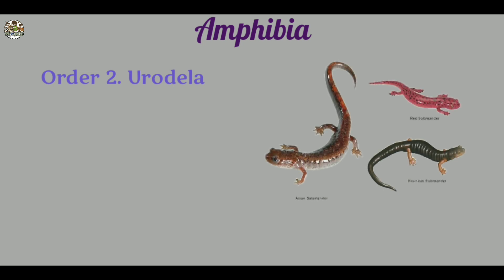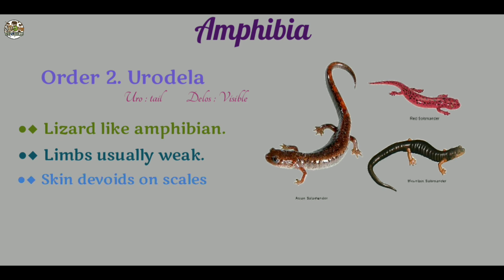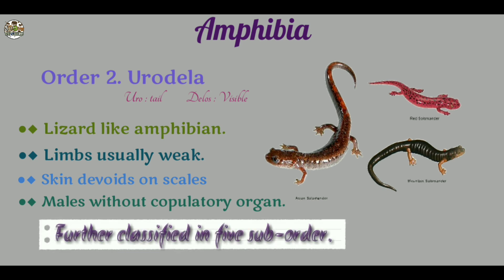Order two: Urodela. 'Euro' means tail and 'delos' means visible. Here are some characters of order Urodela. They are lizard-like amphibians. Limbs are usually weak. Skin divides on scales. Males are without copulatory organs. This order is further divided into five sub-orders.